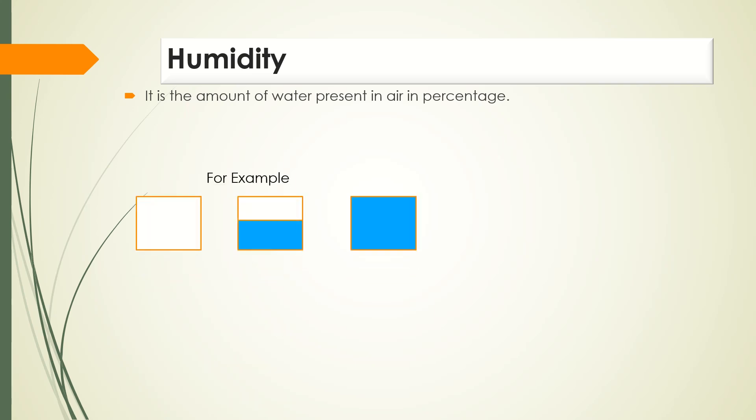For example, we have three air buckets. As you can see in the picture, white color represents air and blue color represents water vapors.